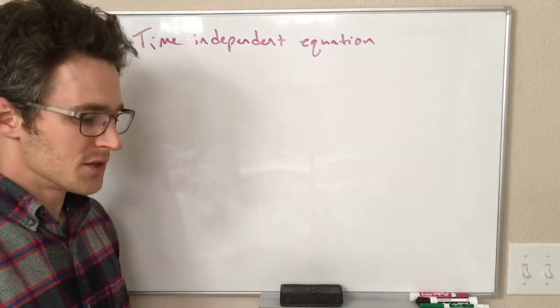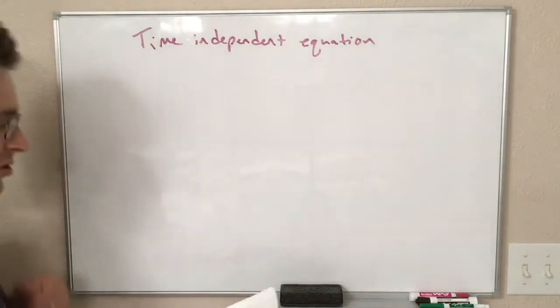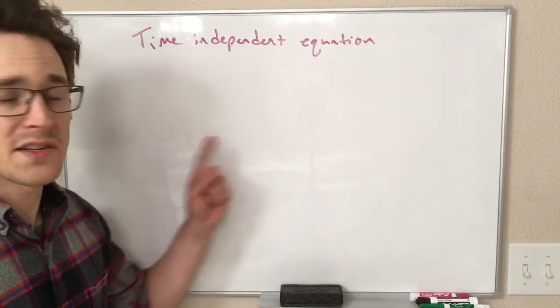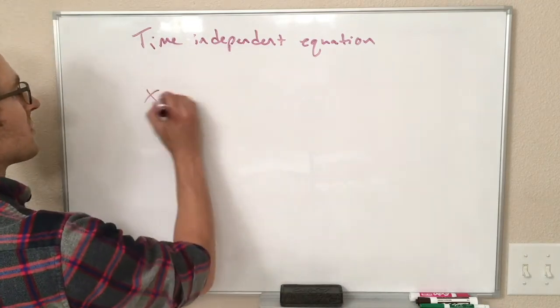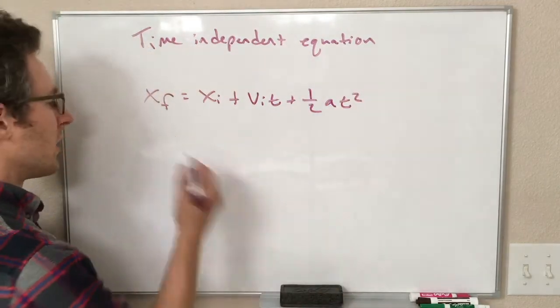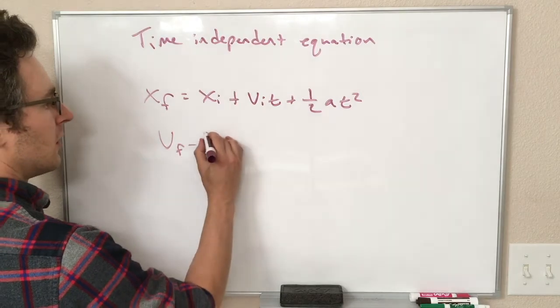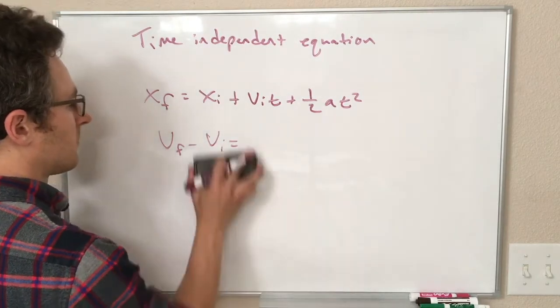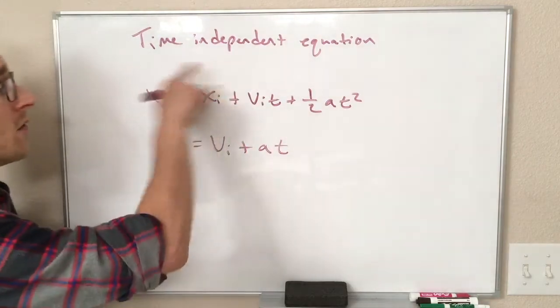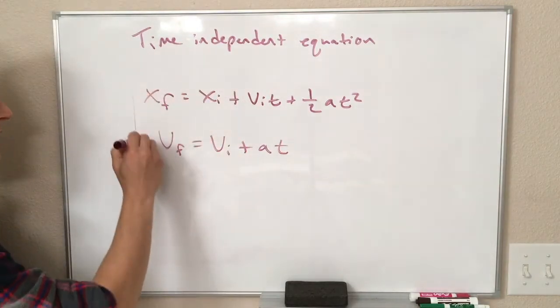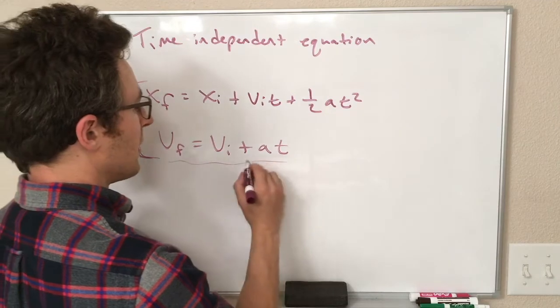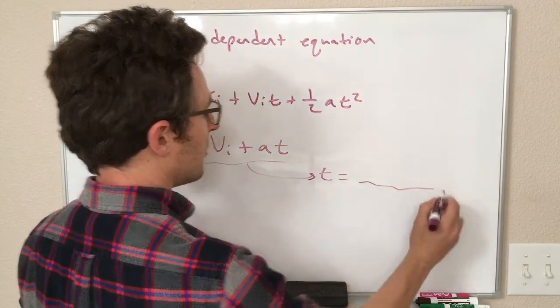And the math reason for that is because we actually take our last equation, the x-final equals x-initial plus all that stuff, that equation has a time in it. We also have another equation we talked about, v-final equals v-initial plus a times t. So the way we get this equation is from these two actually pretty simply. We solve this one for t, so we turn this equation into something that looks like t equals a bunch of stuff. It's v-final minus v-initial over the acceleration. So we take that stuff and we plug that in for t in this equation.